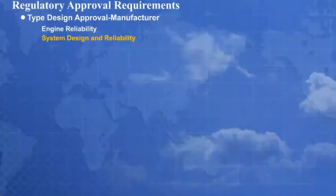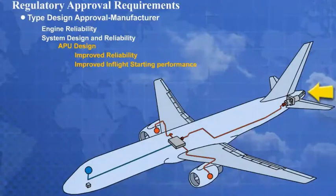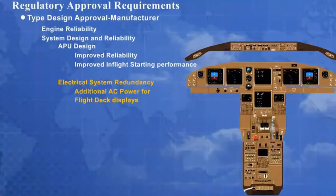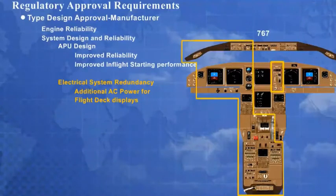The airplane may require additional equipment to meet the system design and reliability standards for ETOPS. The APU is normally designed or upgraded to improve reliability and in-flight starting performance. On some models, electrical system redundancy is enhanced with the addition of a hydraulic motor generator or backup engine-driven generators to increase dispatch flexibility for ETOPS. These additional AC power sources can provide essential loads to flight deck equipment in the event of multiple primary generator failures. The highlighted flight deck equipment, for example, is available with the HMG as the only source of electrical power.